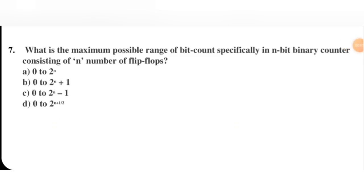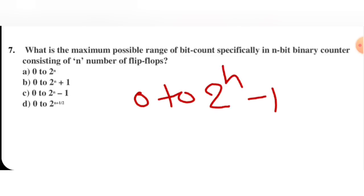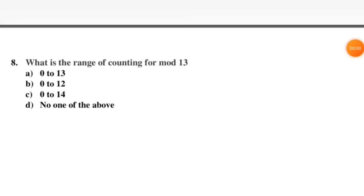Next question: what is the maximum possible range of bit count in an n-bit binary counter consisting of n flip-flops? Range means minimum to maximum value. The range is 0 to 2 raised to power n minus 1. This was discussed before; the right option is C.